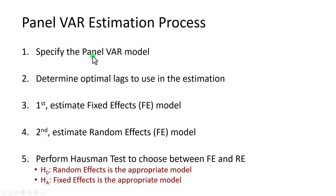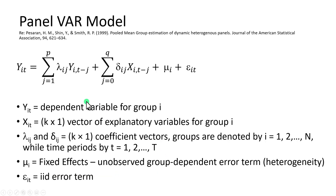To do so, we first need to specify the panel VAR model and determine the optimal lags to use in the estimation. Thirdly, we estimate the fixed effects model, and afterward the random effects model, and perform a Hausman test to select between the two, under the null hypothesis that random effects is the appropriate model. We specify the bivariate panel VAR for our study, and notice in particular that we include the fixed effects term — the unobserved group-dependent error term that captures heterogeneity.